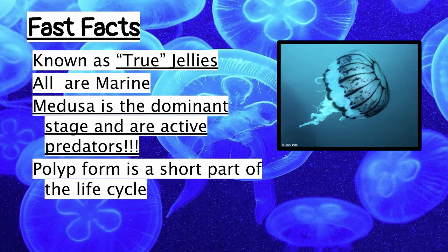The medusa is the dominant stage, meaning it's the adult form of their life cycle, and these guys spend most of their lives as a medusa versus the polyp stage. This is really important to remember because as we look at the other classes, they will have different dominant stages, and some are even missing a stage. For Scyphozoans, the medusa is the dominant stage.